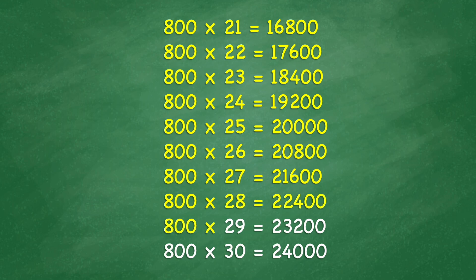800 times 29 equals 23,200. 800 times 30 equals 24,000.